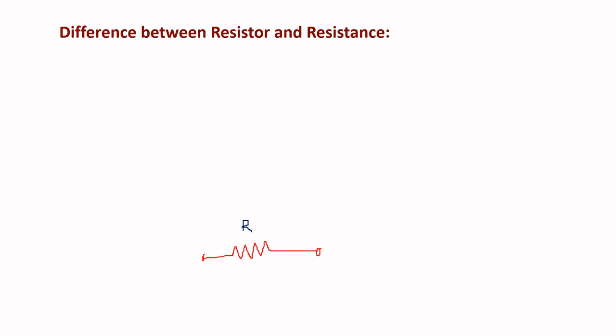The next difference is between resistor and resistance. A resistor is a material which has the property of opposing current flow. Resistance is the property of a material which opposes the flowing of current. When current flows through a resistor, the material opposes that flow, and this opposition property is what we call resistance.